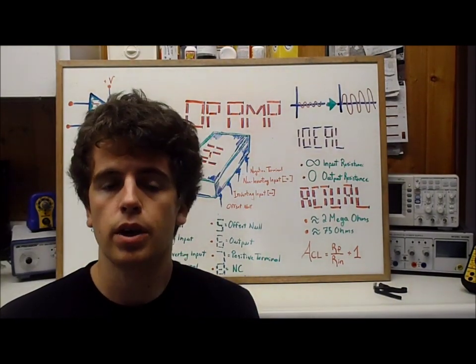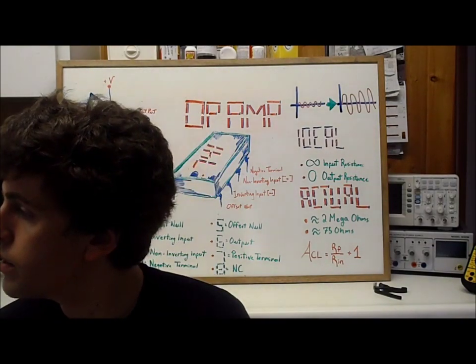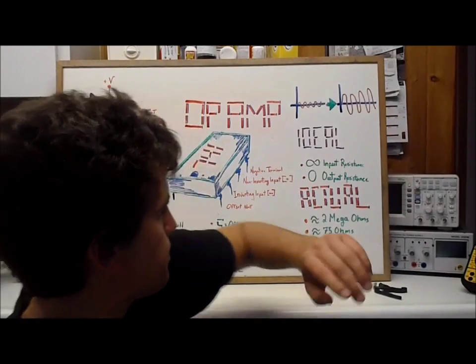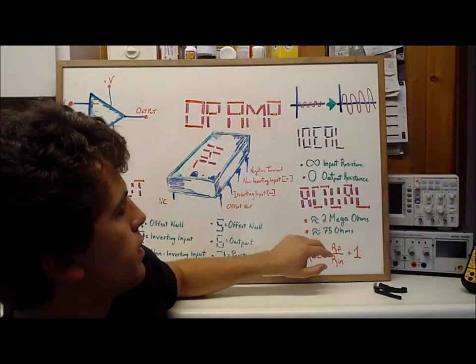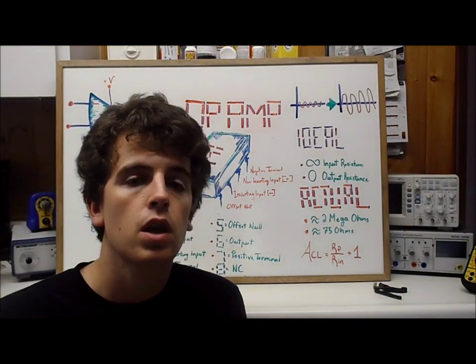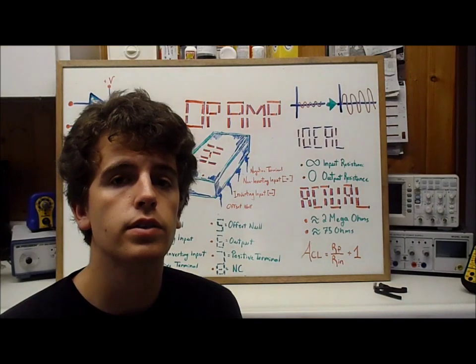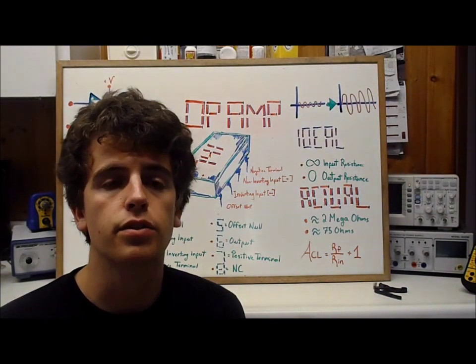But in reality, we can't get infinity and we can't get zero. So we actually place real life values to it, but we make them as high and as low as we can. The input to an actual op amp is about 2 mega ohms and the output is 75 ohms. That allows us to do a pretty ideal situation.